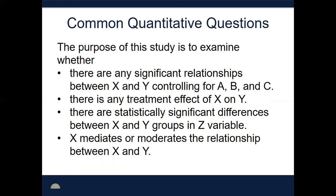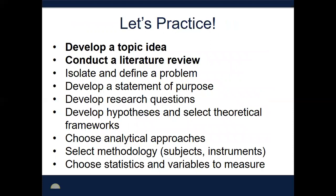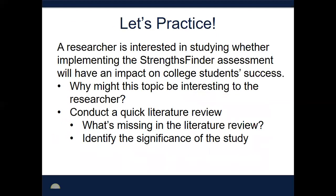Now that we've talked about developing a topic idea and literature review, it might be helpful to think about what that looks like. For the final lab assignment for this class, you're going to analyze the Thriving Quotient data. We implemented the StrengthsFinder assessment on campus and were interested in whether it had any impact on students' success — and what it is about StrengthsFinder that might have had that impact. If you're interested, do a quick literature review: Google 'StrengthsFinder college students' or 'StrengthsFinder undergraduates,' see what's out there, what might be missing, what's unknown, and that can help you identify the significance of your study.